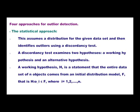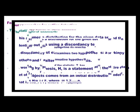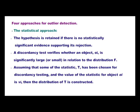Now we will see the four approaches for outlier deduction. The first approach is the statistical approach. This assumes a distribution for the given data set and then identifies outliers using a discordancy test. A discordancy test examines two hypotheses: a working hypothesis and an alternative hypothesis. The working hypothesis H states that the entire data set of n objects comes from an initial distribution model f, given by H: o_i ∈ f where i = 1 to n. The hypothesis is retained if there is no statistically significant evidence supporting its rejection.